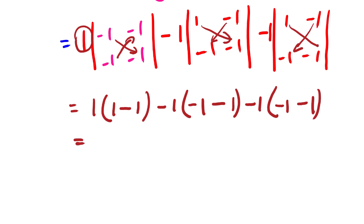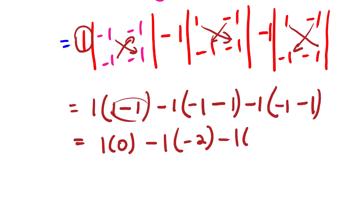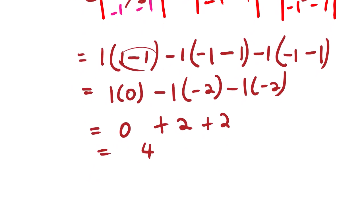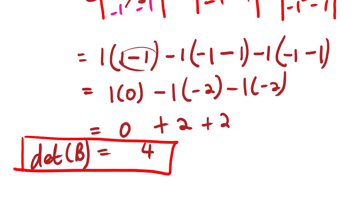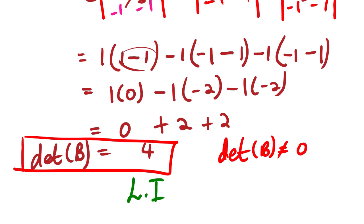Combining the results: 1×0 minus 1×(-2) gives -2 minus 1, which is -2. Then we have 0, and this term gives 2 plus 2. Our determinant equals 4. Since the determinant is not equal to zero, this simply means that v1, v2, v3 are linearly independent. That is how we determine whether vectors are linearly dependent or linearly independent using the determinant method.